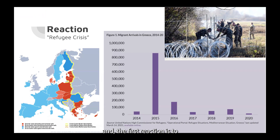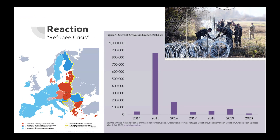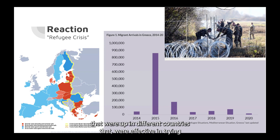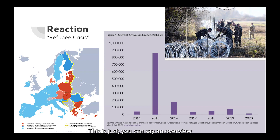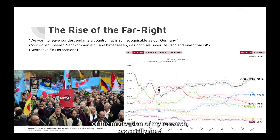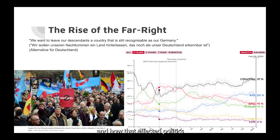The first reaction was to enact different laws within the EU to limit people's movements. Then we saw physical fences put up in different countries that were effective in trying to shut down or lower the numbers of people coming into Europe. This is an overview of the motivation of my research, especially now with the rise of the far right and how that affected politics generally within all of Europe, but specifically Germany.